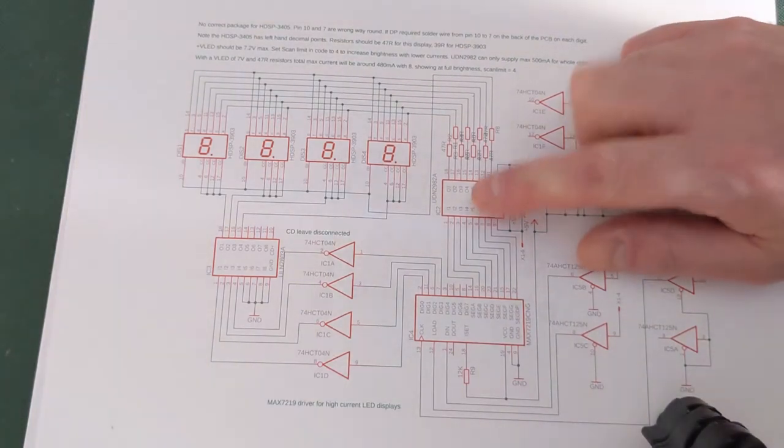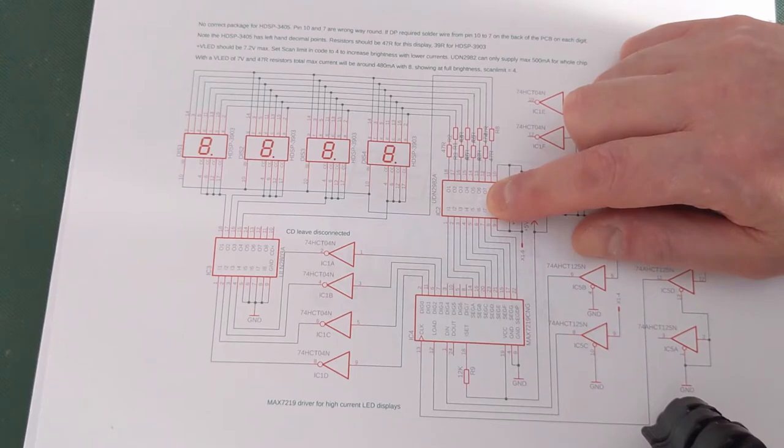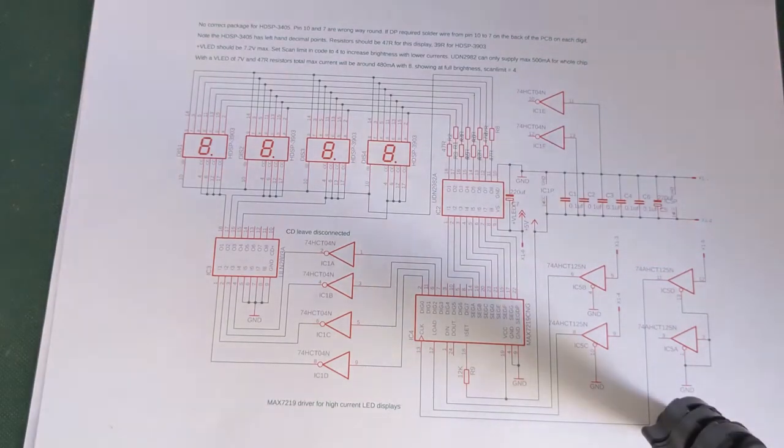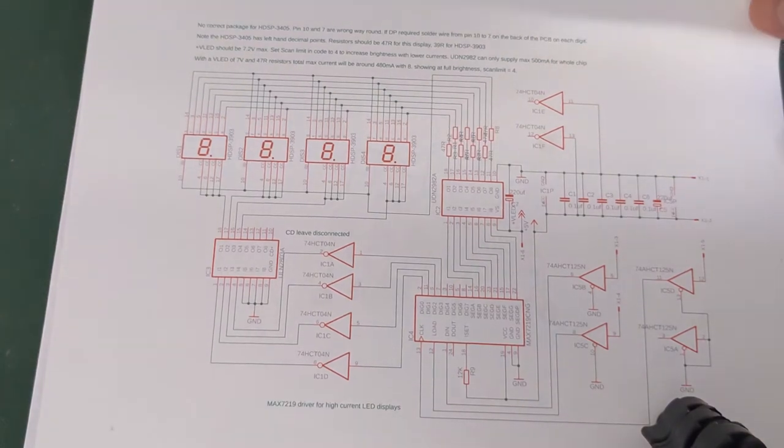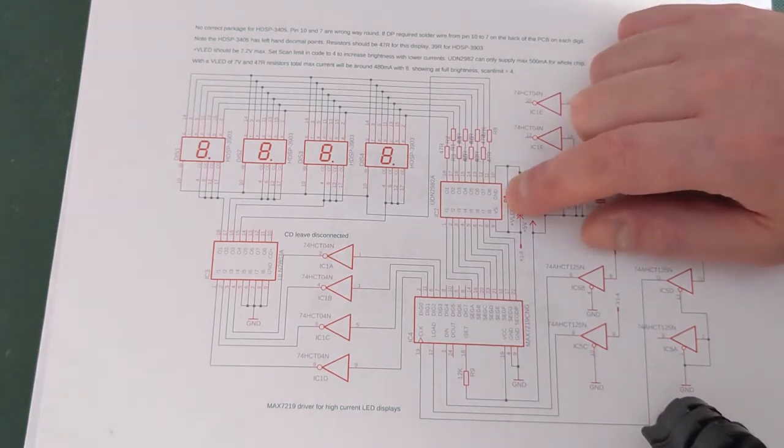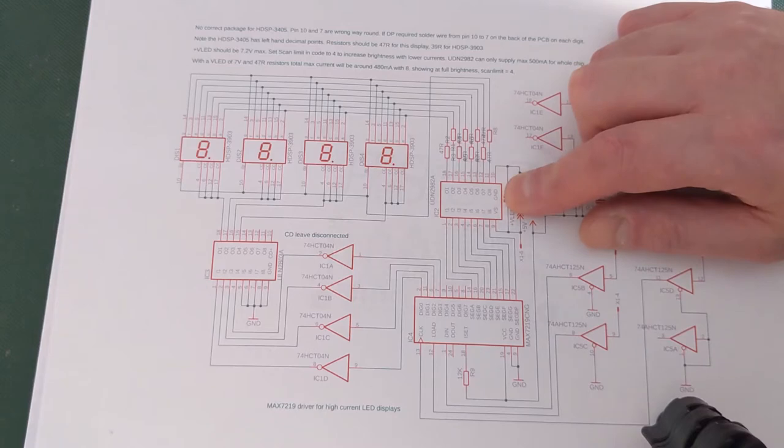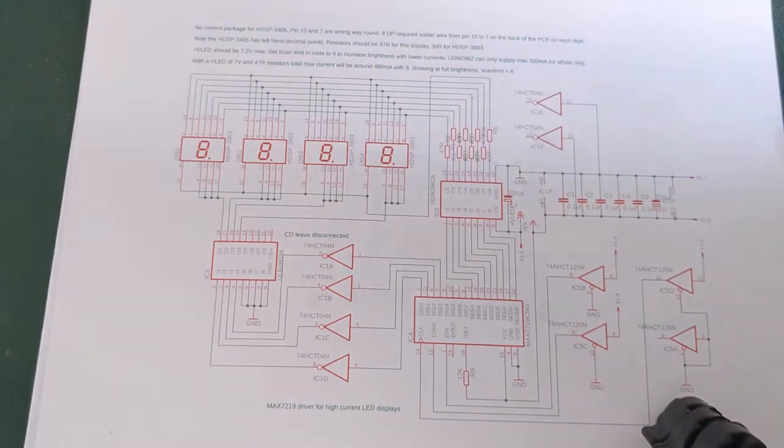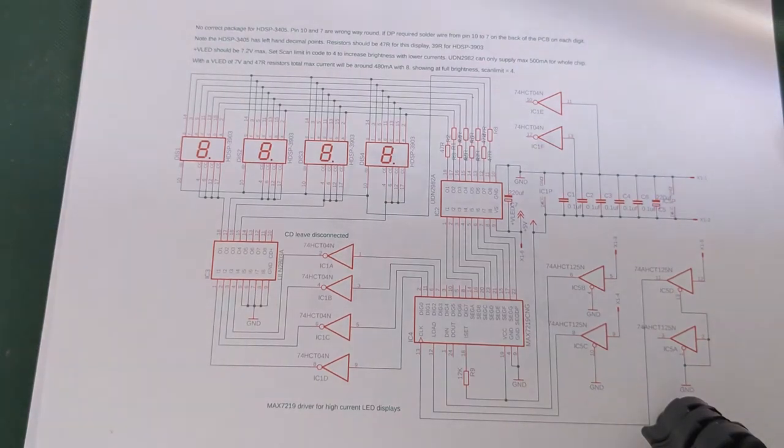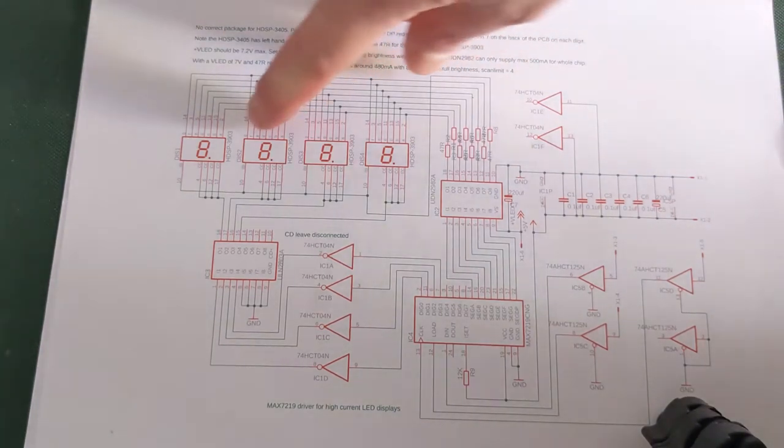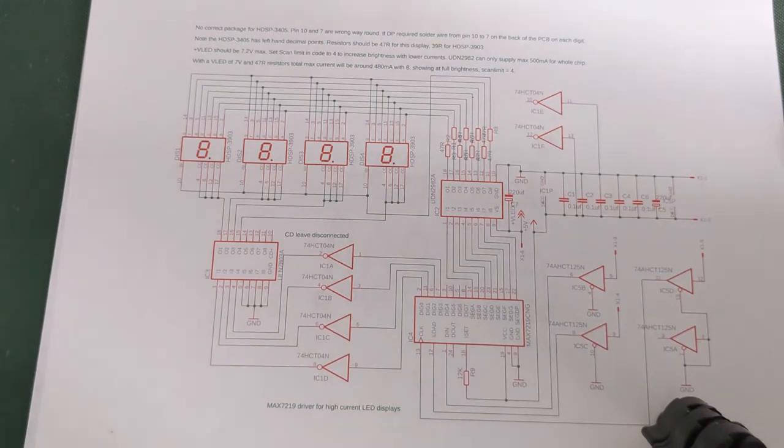And then that enables you to run higher current displays. Now the snag with these chips - they'll only take a maximum of 500mA for the entire chip. So you can't run loads of current through them because they're going to blow up. So what I've done in my case is I've set the peak current to around 60mA, which if you divide that by eight gives you 7.5mA, which isn't much more than the original 5mA with the MAX7219. So as I said earlier, I've put in the code, adjusted the scan limit so it only scans a maximum of four digits. So each display is only on for 25% of the time. So that doubles your average current to 15mA, which is plenty bright enough for these particular displays.